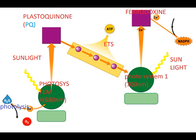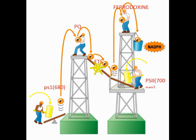In non-cyclic photophosphorylation, when a photon of light strikes Photosystem 2 at 680 nanometers, electrons from the chlorophyll become excited from a lower energy level to a high energy level. Those excited electrons are then accepted by plastoquinone as the primary electron acceptor.